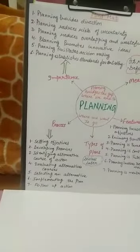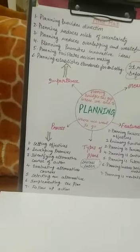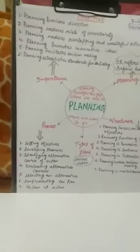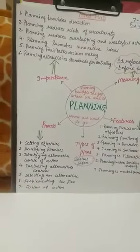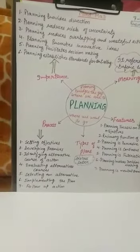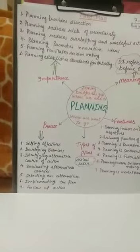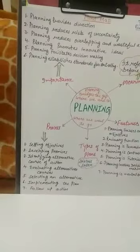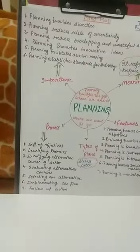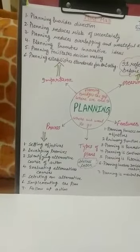The first step is setting objectives. Every organization must have certain objectives. Objectives may be set for the entire organization, or for each department or unit within the organization, and they should be stated clearly. For example, take the case of an automobile company which is planning to increase its sales of small cars by 20% in the next three months — October, November, and December.